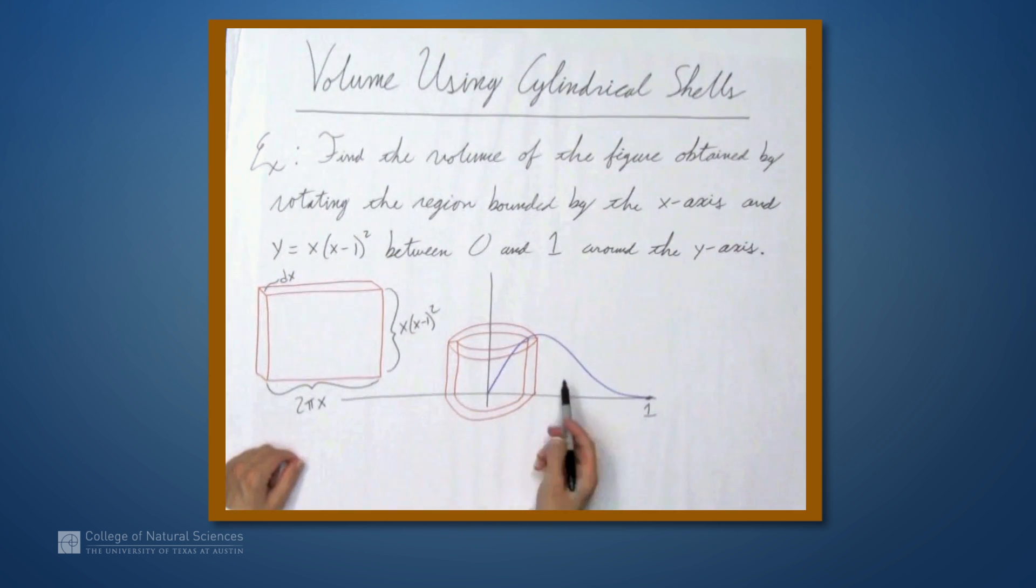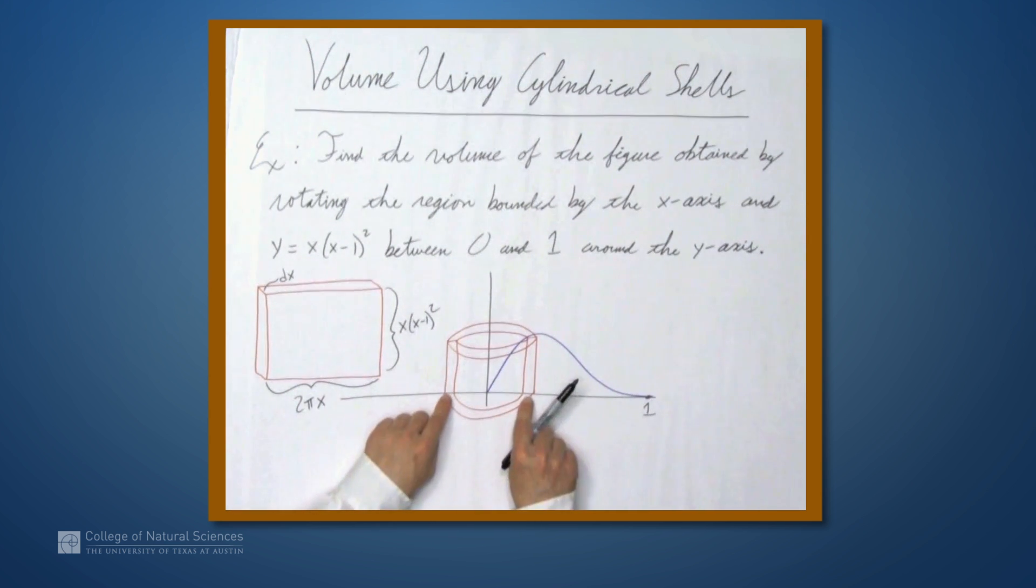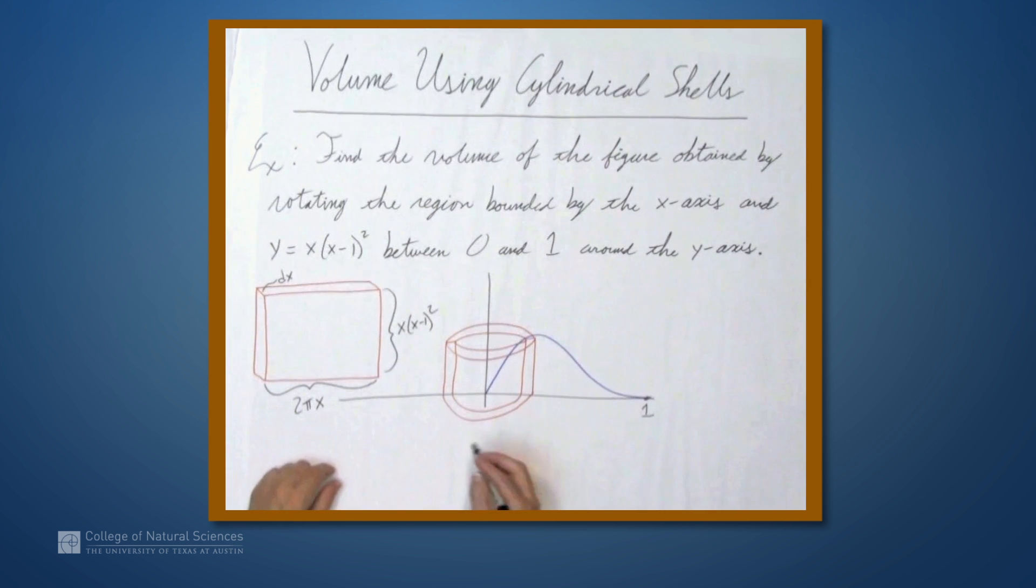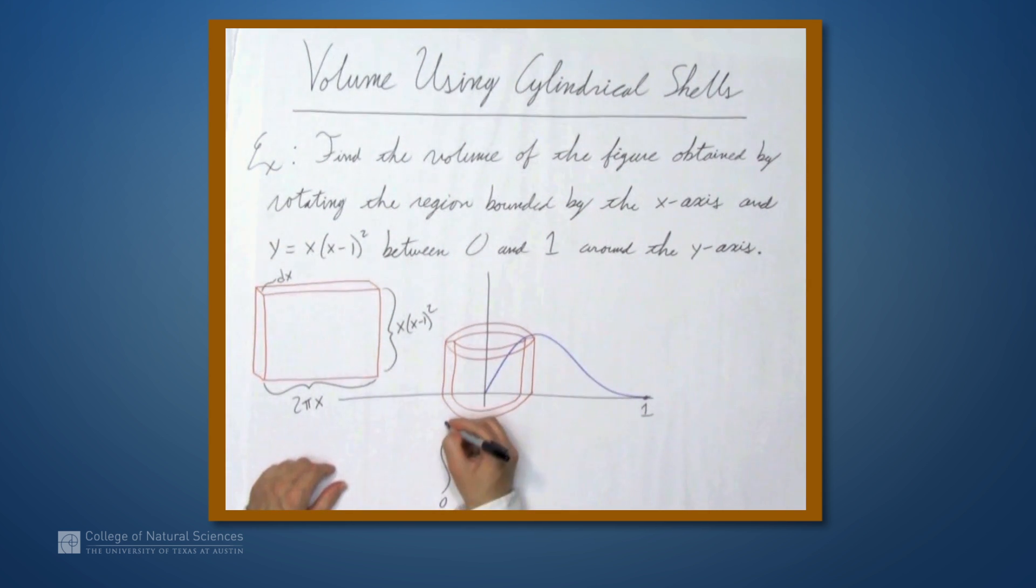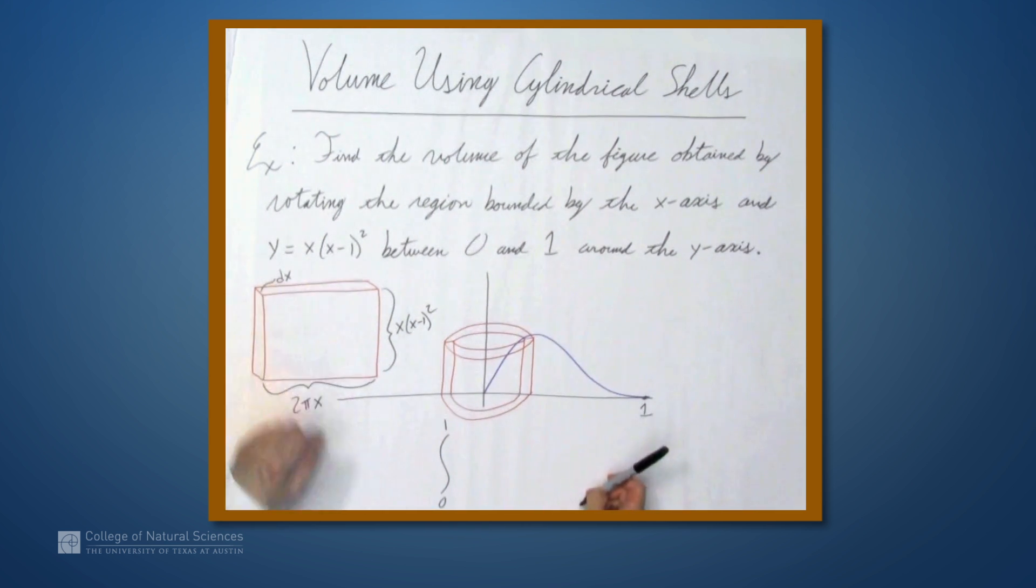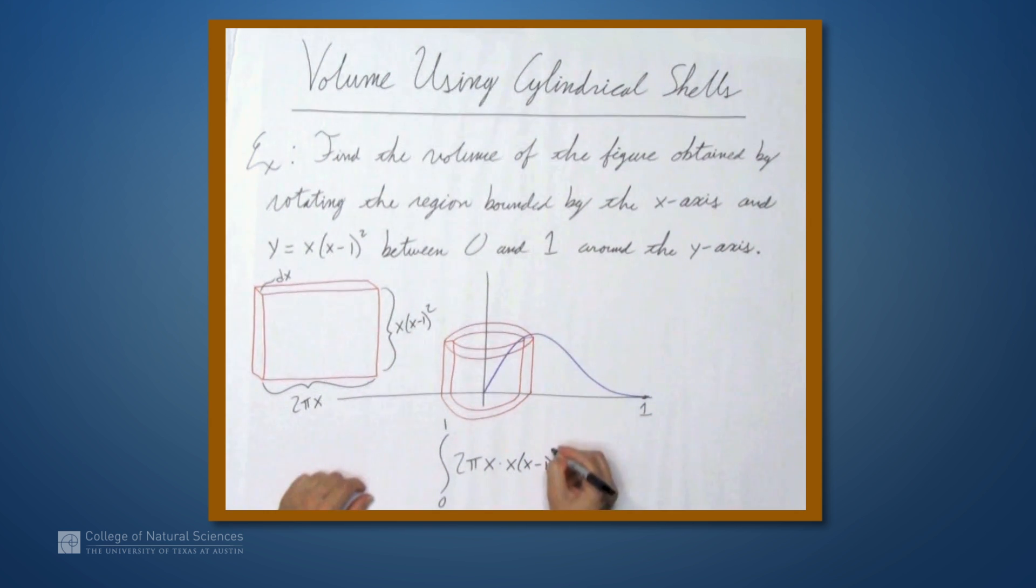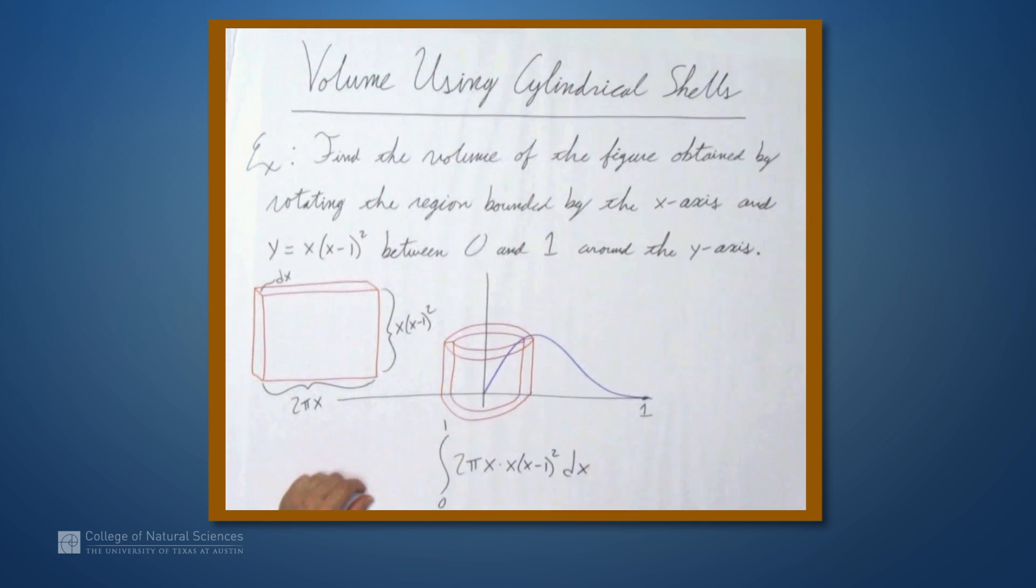So, we find the volume of the region rotated around the y-axis by integrating the formula for the volumes of these cylindrical shells. So, the integral is the integral from 0 to 1, because now we're integrating in terms of x, right? We've got a nice dx here.